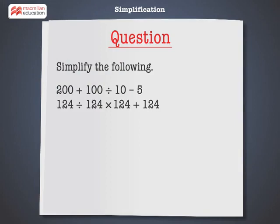Simplify the following: 200 plus 100 divided by 10 minus 5. And 124 divided by 124 multiplied by 124 plus 124.